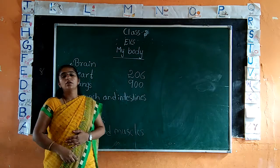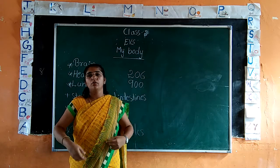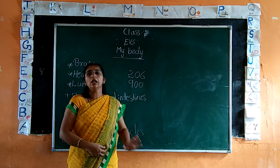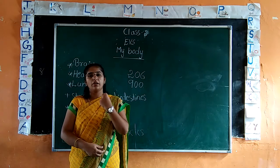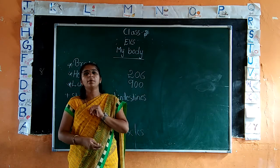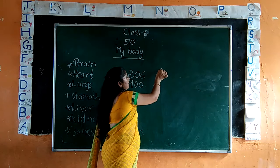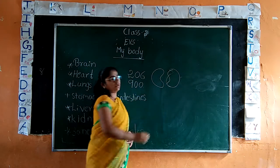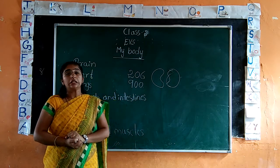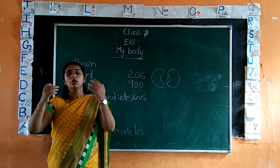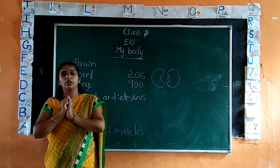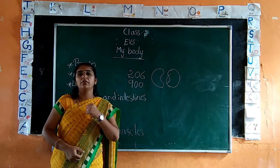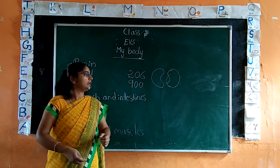Next — kidneys. Where are the kidneys? Here. It is also an internal part. We have two kidneys. What is the shape of kidneys? The shape of kidneys is bean shape. Kidneys help us to throw the waste from our body in the form of liquid like urine.